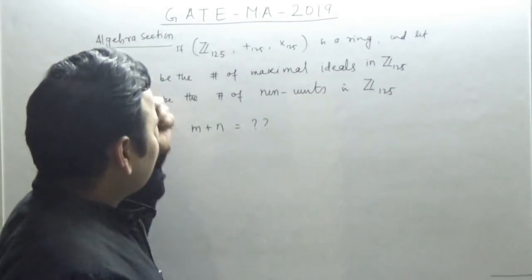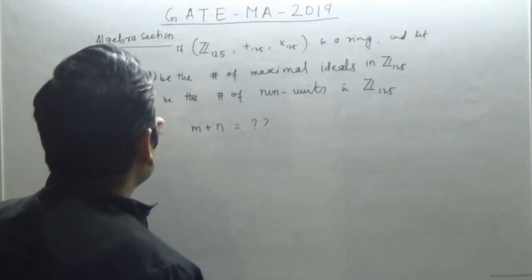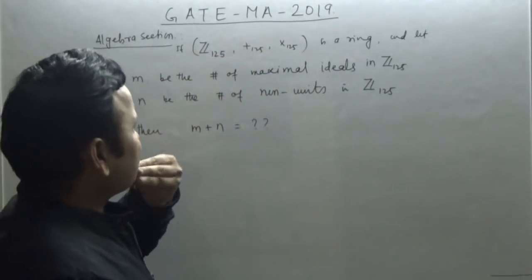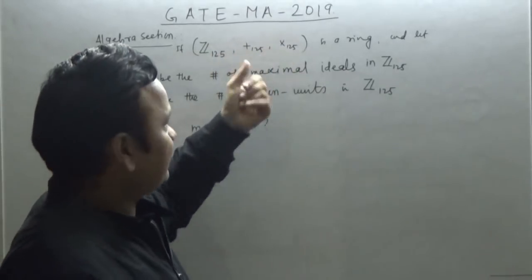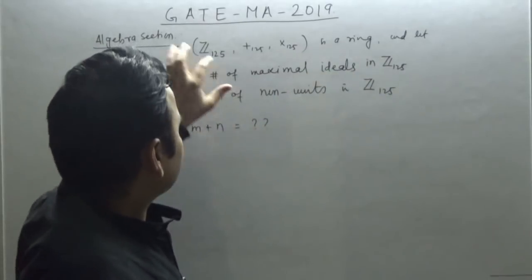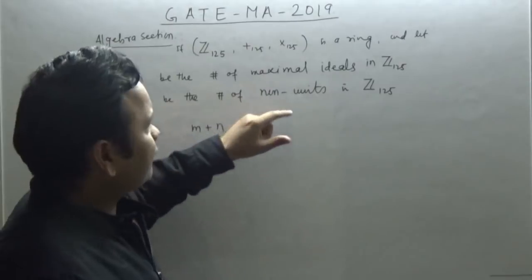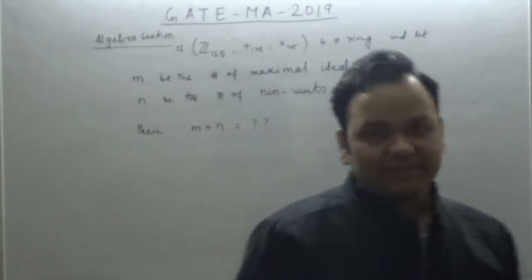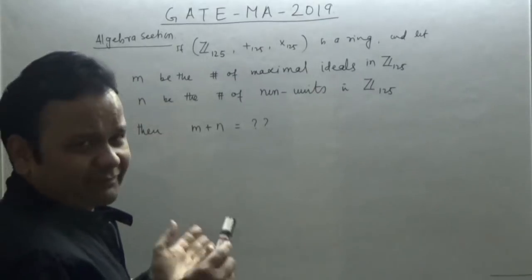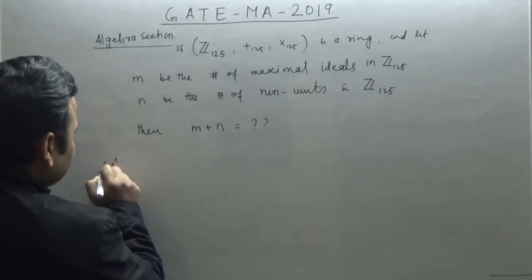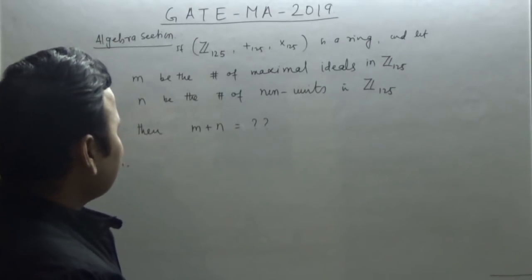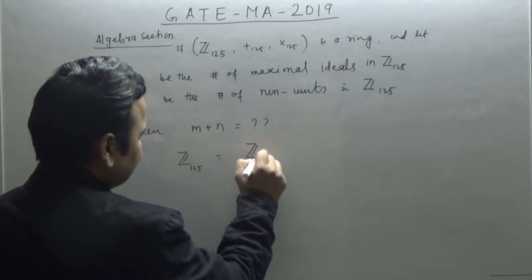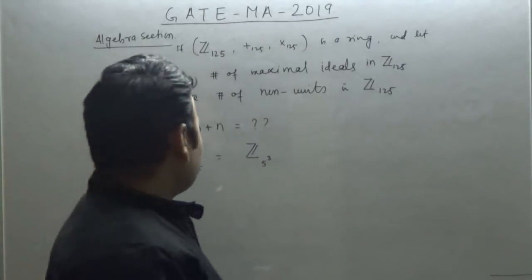The question is from the algebra section. We have Z₁₂₅, which is a ring under addition modulo 125 and multiplication modulo 125. Note that 125 = 5³. Let M be the number of maximal ideals in Z₁₂₅, and N be the number of non-units in Z₁₂₅. The question asks: what is M plus N?